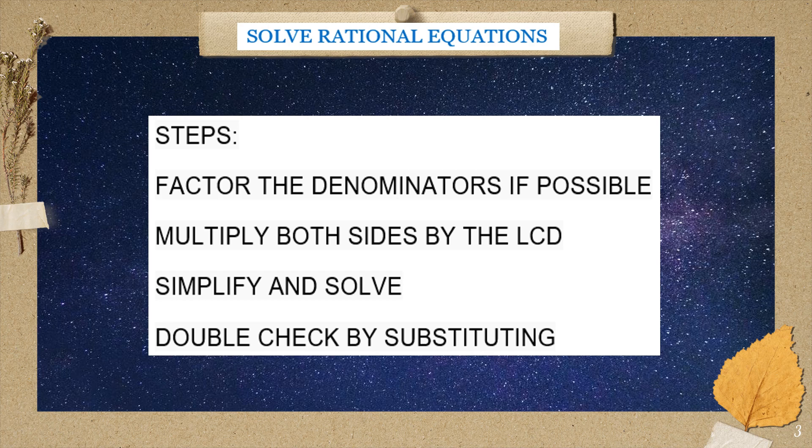So we have here the steps in solving rational equations. First, factor the denominators if possible. Second, multiply both sides by the LCD. Third, simplify and solve. And the last one, double-check by substituting.